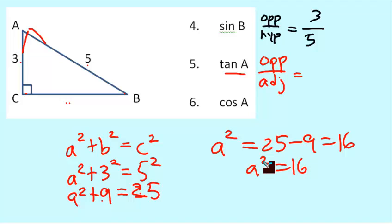Get rid of the second power by applying the square root to both sides. Technically, it's plus and minus 4. But since you can't have a negative distance, we'll just stick with the positive 4. So, now I know this is 4.